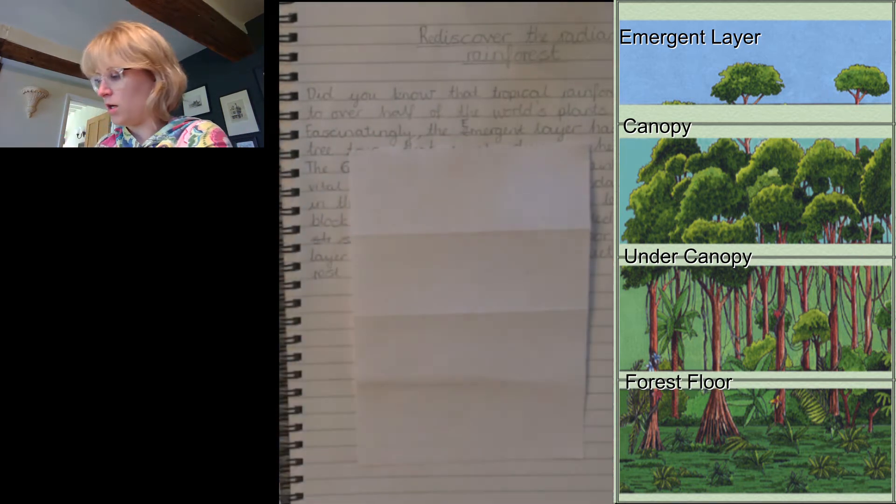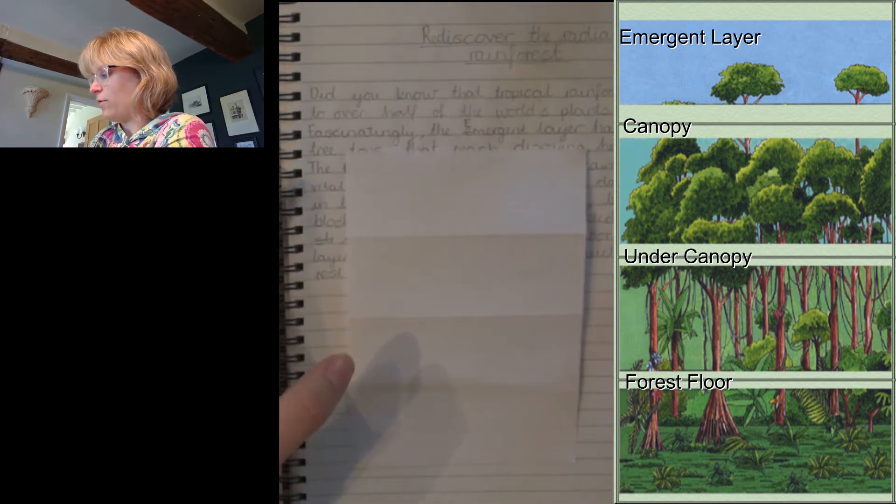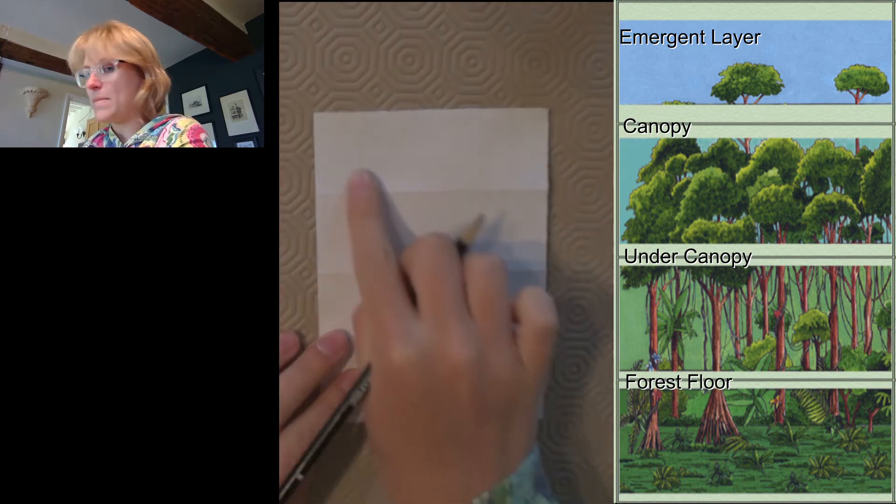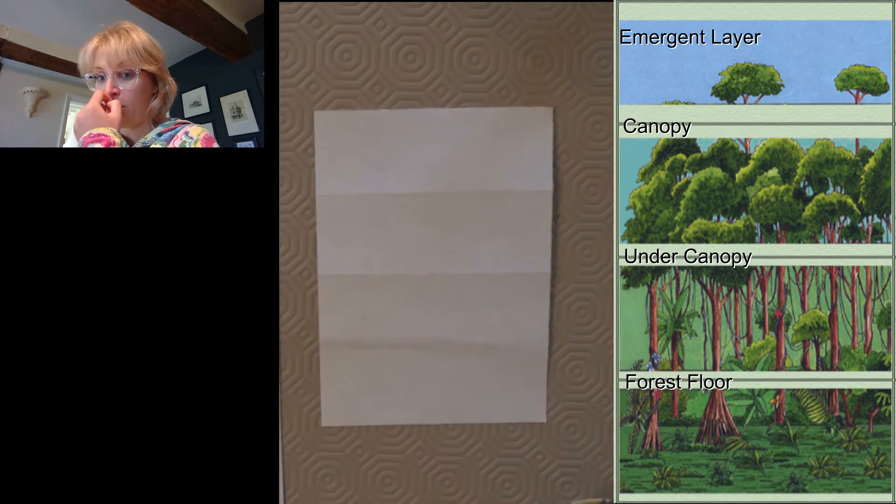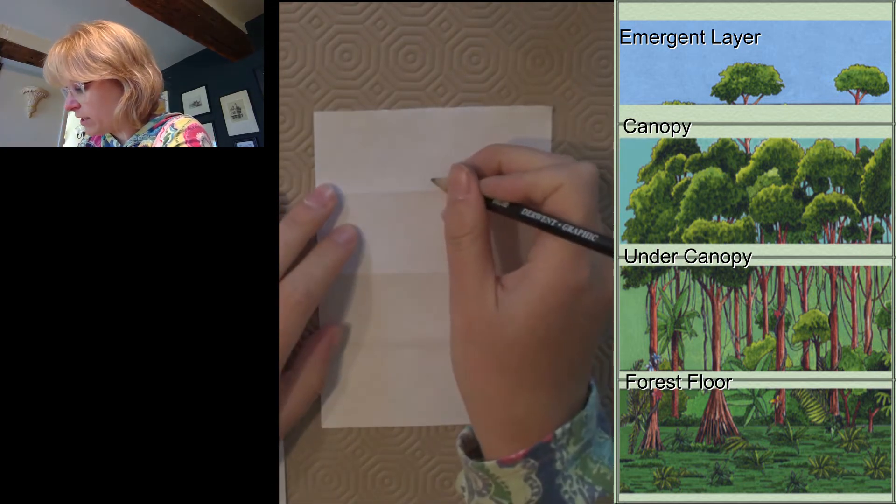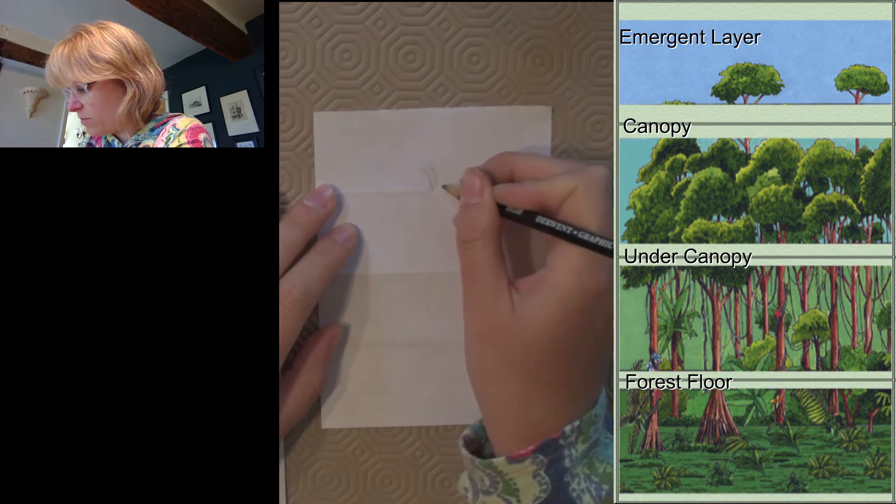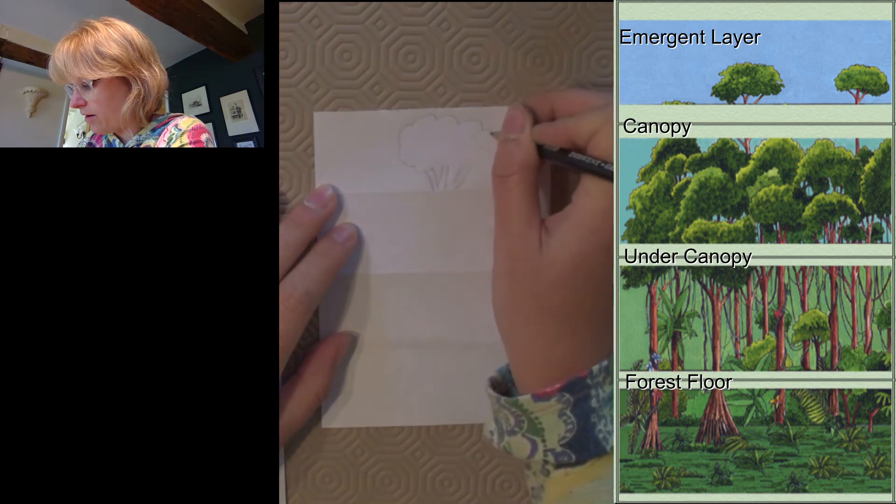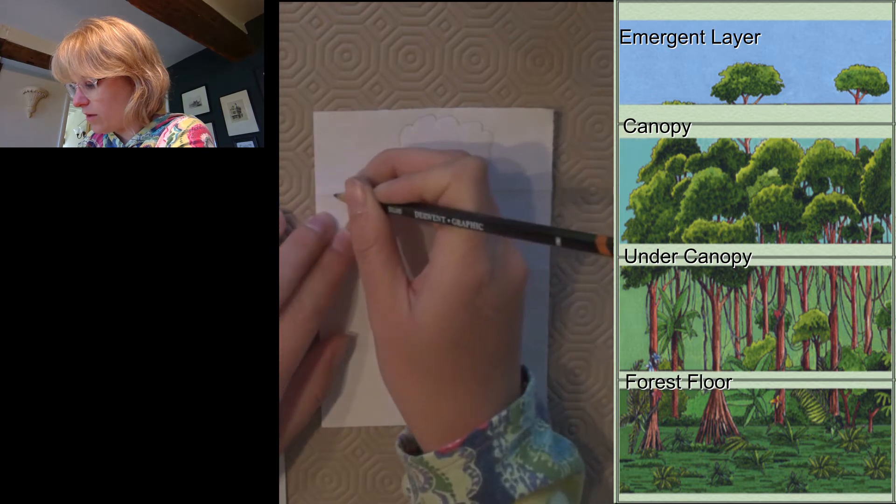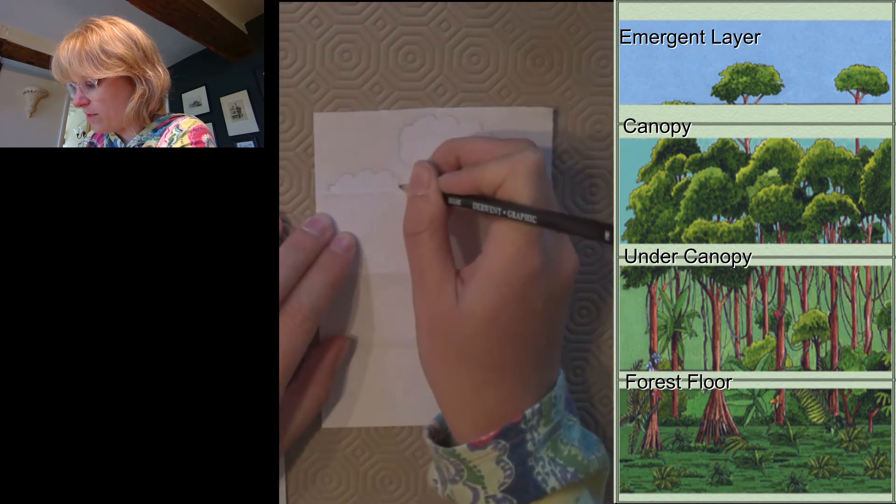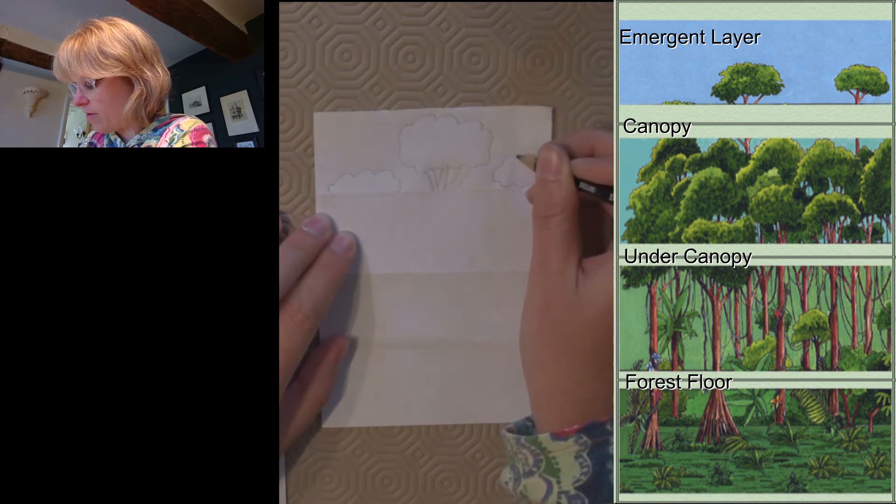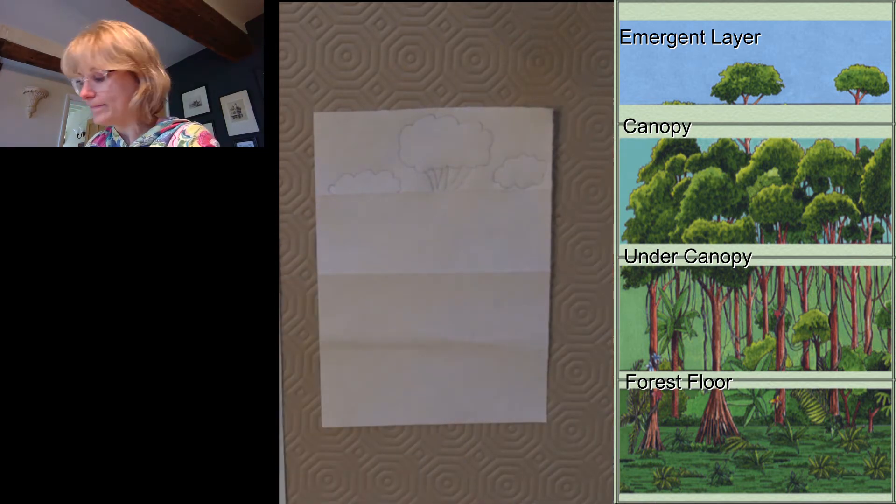So I'm going to start with the emergent layer. Now in the emergent layer you can only see the tops of the trees, so I might just put a few branches and then a big tree there, and I might do maybe just the top of this tree and maybe a whole bit of tree there. And then that's it.